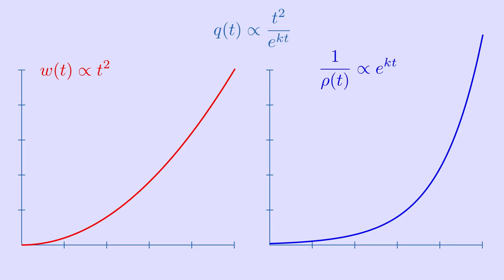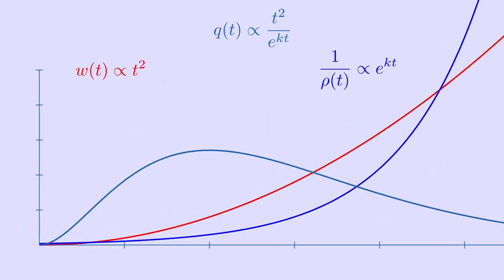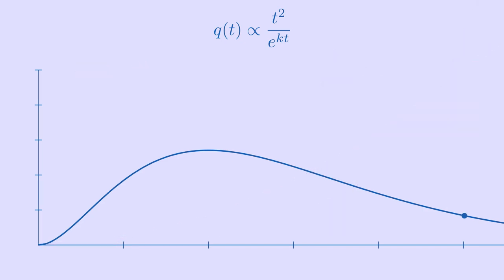As our rocket launches, the polynomial term starts out winning, and dynamic pressure increases. But eventually, as we've seen, the exponential term catches up, passes the polynomial term, and stays increasingly ahead from there on. We've now passed max Q, and dynamic pressure decreases from then on.